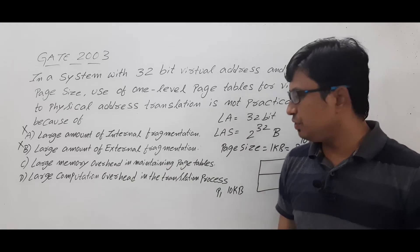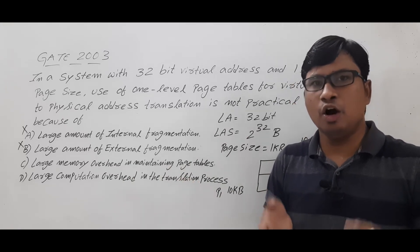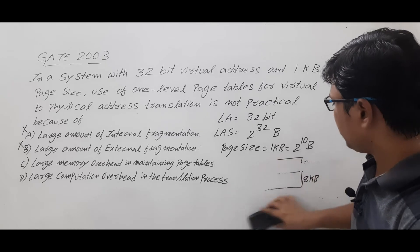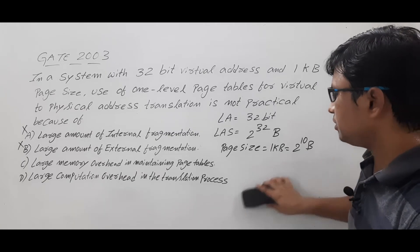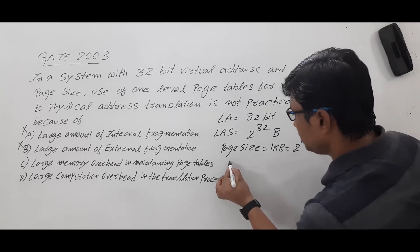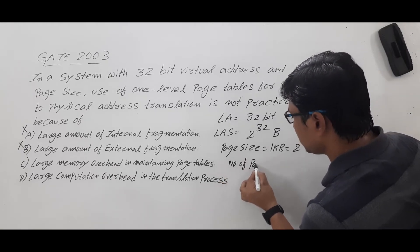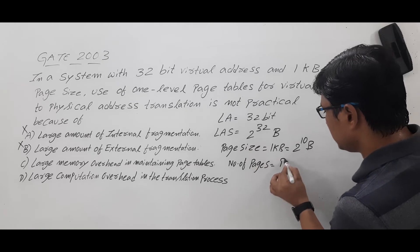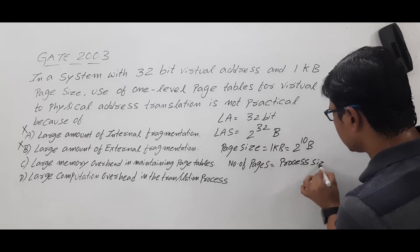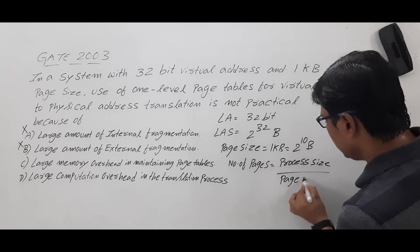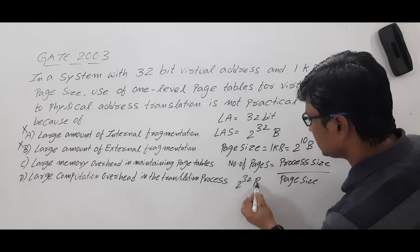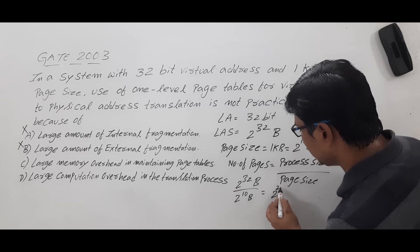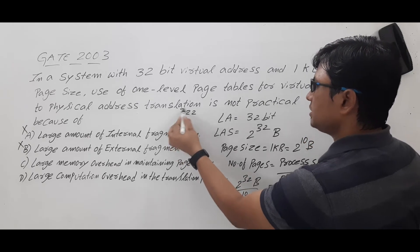Now look at option C: large memory overhead in maintaining page tables. We need to find how many page table entries there are. The number of pages is equal to process size divided by page size. The process size is 2^32 bytes and page size is 2^10 bytes. Dividing gives 2^22 pages.